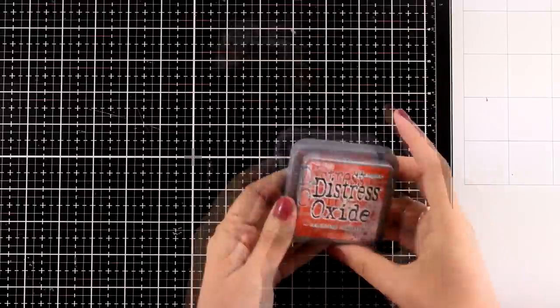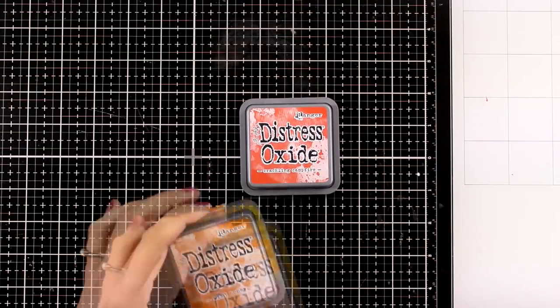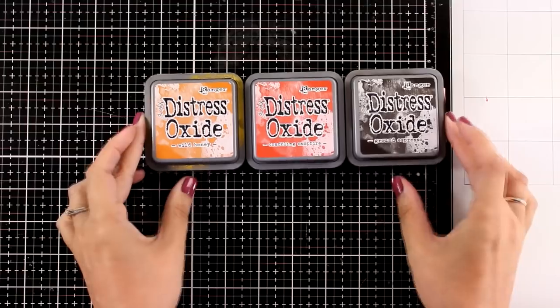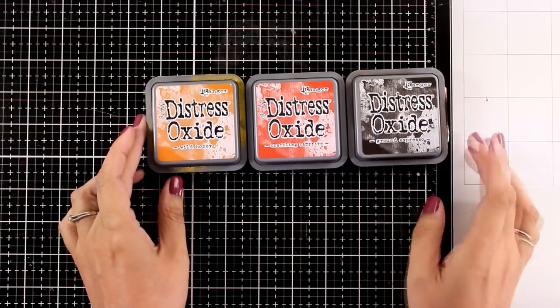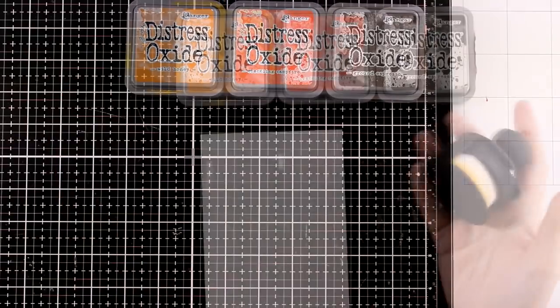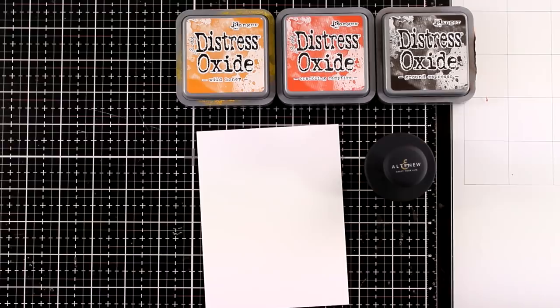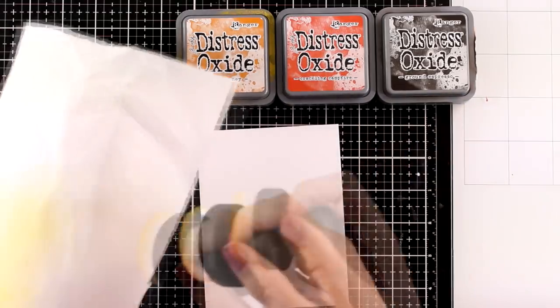Today I'm going to create three backgrounds using ink blending techniques and I will be working on all three of them with the new distress oxide color which is Crackling Campfire. So I'm going to share three different color combos that work great for fall cards.